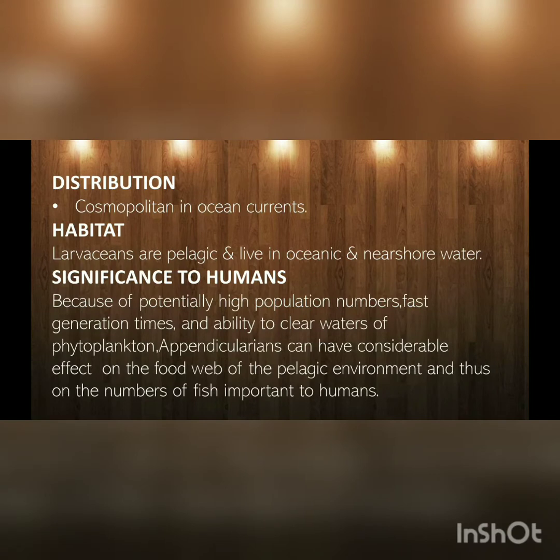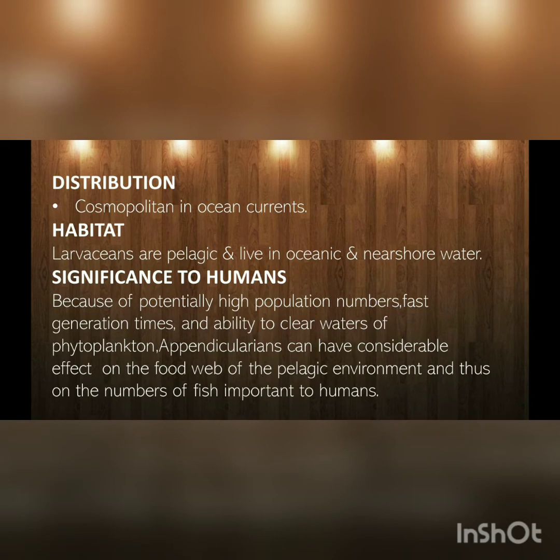Distribution: it is found in worldwide coastal areas. Habitat: larvaceans are free-swimming and live in the ocean near the shore. Significance to humans: because of potentially high population numbers, short generation times, and ability to clear waters of phytoplankton, appendicularians can have considerable effect on the food web of the pelagic environment and thus on the numbers of fish important to humans.